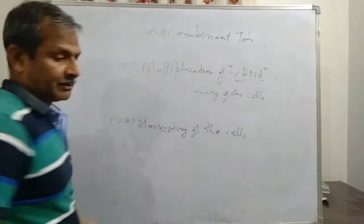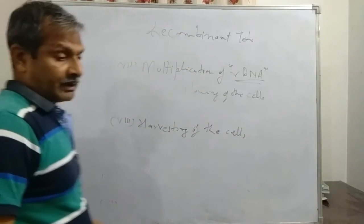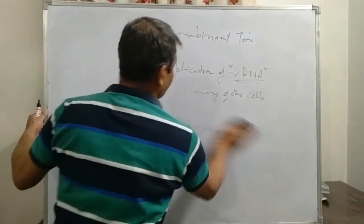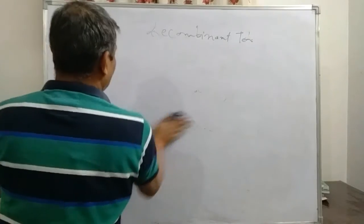So these are the steps, how we perform a recombinant process. With the help of the background, we are going to see that.